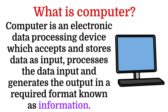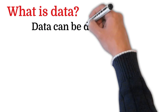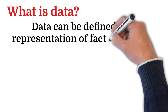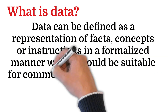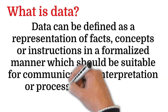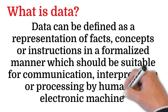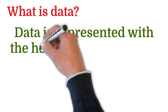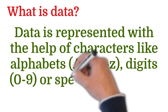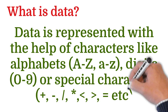Now the question arises: what is data and information? Data can be defined as a representation of facts, concepts, or instructions in a formalized manner which should be suitable for communication, interpretation, or processing by human or electronic machine. Data is represented with the help of characters like alphabets, digits, or special characters.